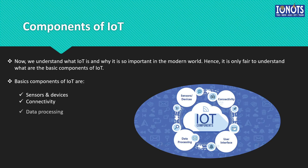The next component is data processing. This component takes in the data which is on the cloud and then processes it. The processing varies from application to application and is done via software dedicated to serve that purpose. So this component, in a way, acts like the brain of an IoT system, where the data which is collected is being processed in a way so as to achieve the desired application.